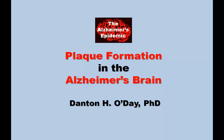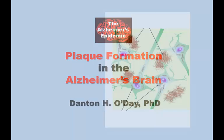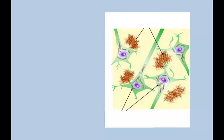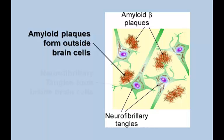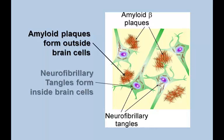Plaque Formation in the Alzheimer's Brain. Plaques and tangles in the brain are hallmarks of Alzheimer's disease. Plaques of the peptide amyloid beta form outside of brain cells, while neurofibrillary tangles form inside of them.